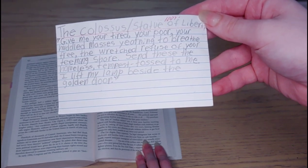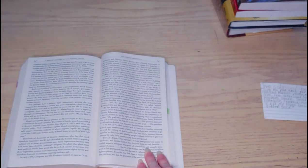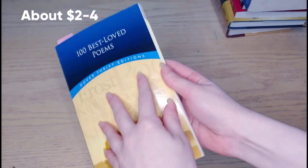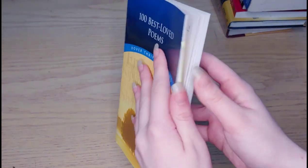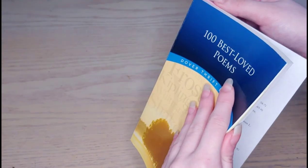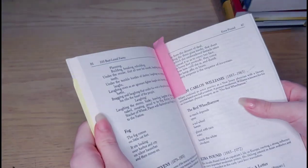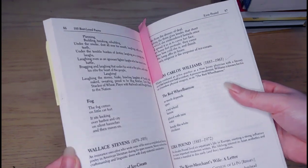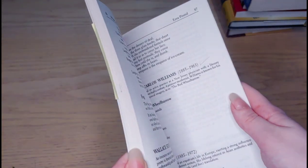We also get a lot of our memory verses from poetry. So we have this book, 100 Best Loved Poems, we got on Amazon from Dover Thrift. It's about two dollars. And I usually find either a snippet of a long poem or a very short poem, and I have that be the memory verse for the week.